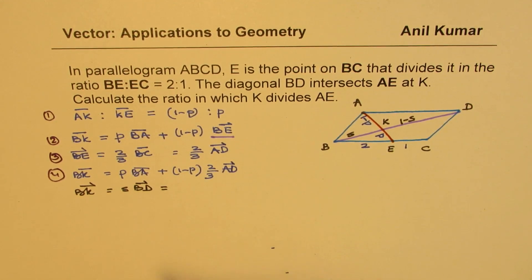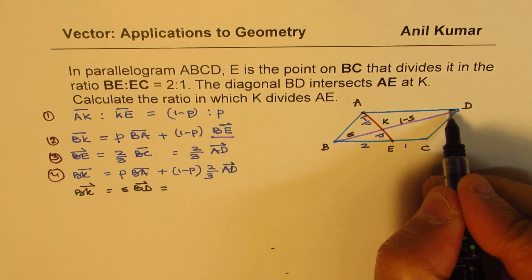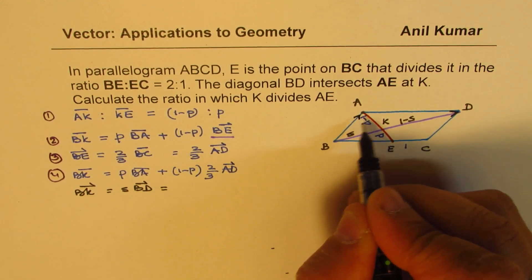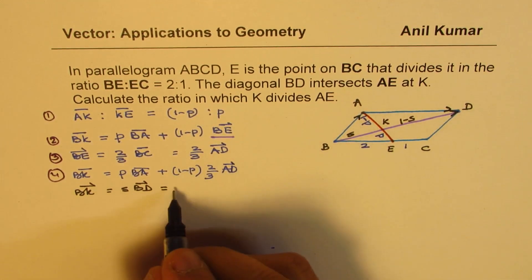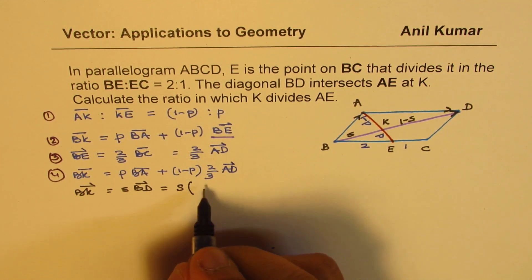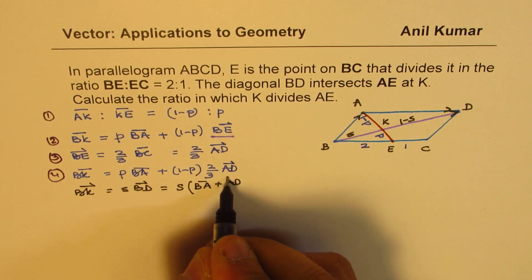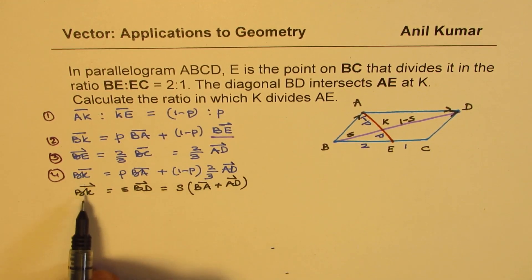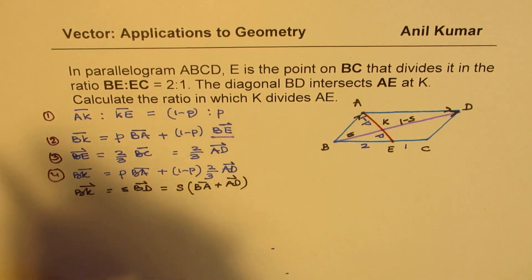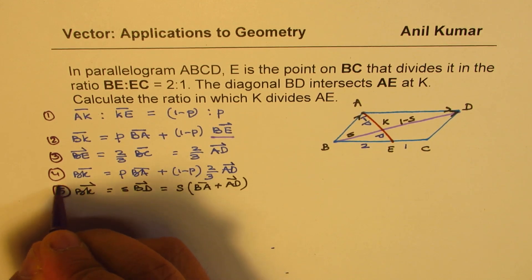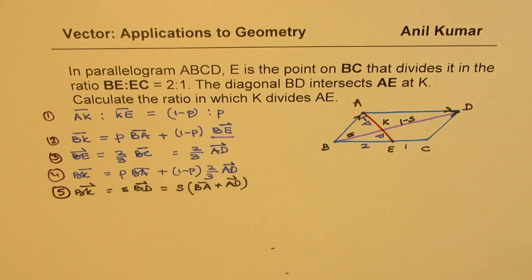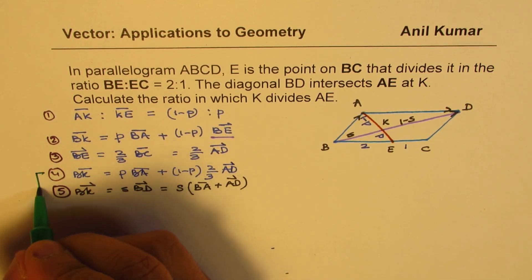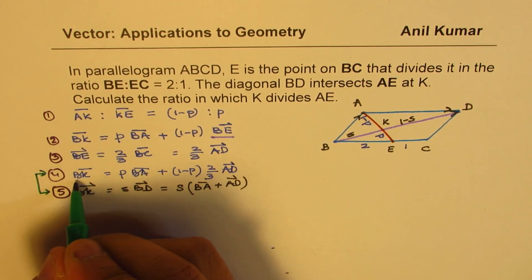But what is BD? BD could be written as BA + AD. So I could write this as S(BA + AD). So we have two equations for BK now. Both should be same.